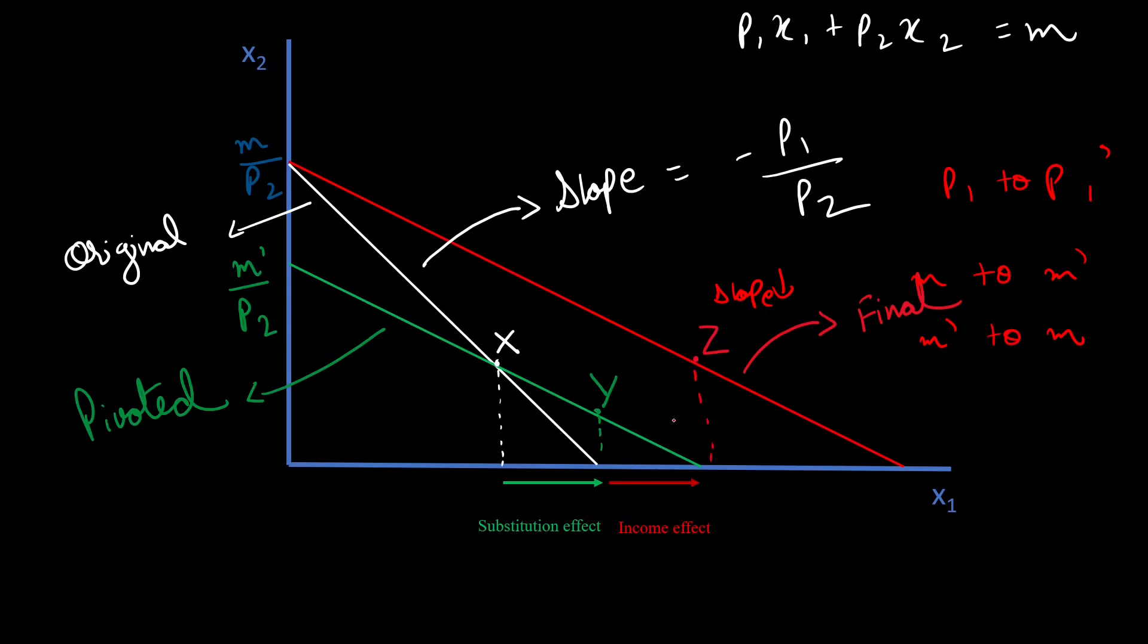Now, you will notice that this red curve is parallel to the green curve. Why is it parallel? Because, now, our price remains the same, right? It's at P1 dash. It's just that, in this case, our M is changing.